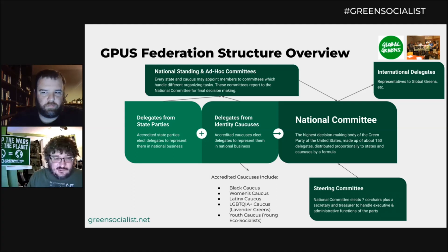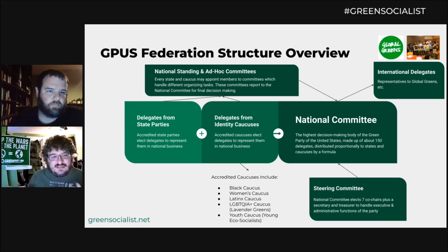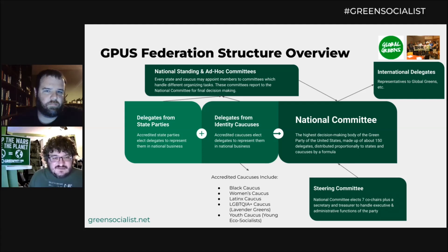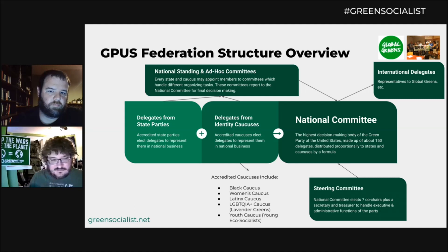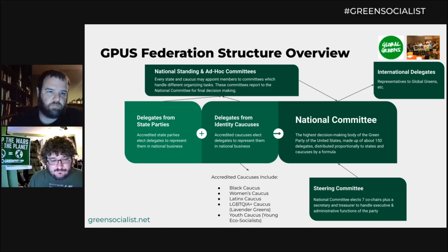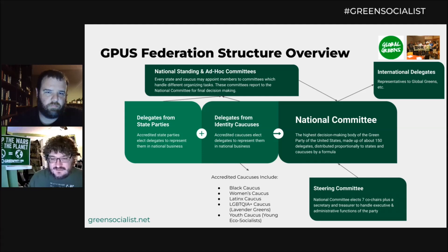There's a ballot access committee that can help states coordinate their ballot access efforts and figure out what they need to do. It even has some funding to give grants to state parties, although not as much as I'd like to see — so we need to up our fundraising and membership. But all of these resources are available for state parties and for members, and what we have now can hopefully grow into much more as more people join the party.